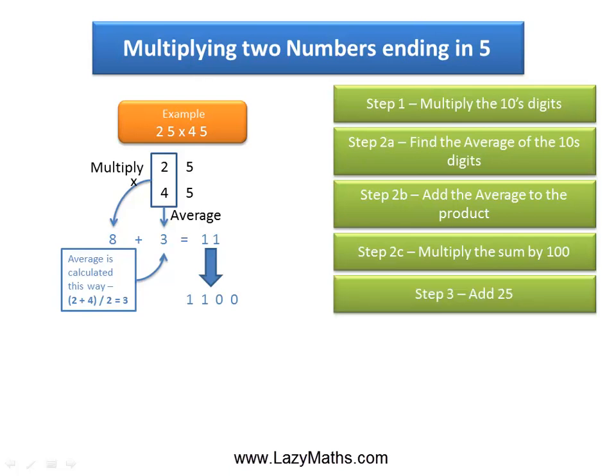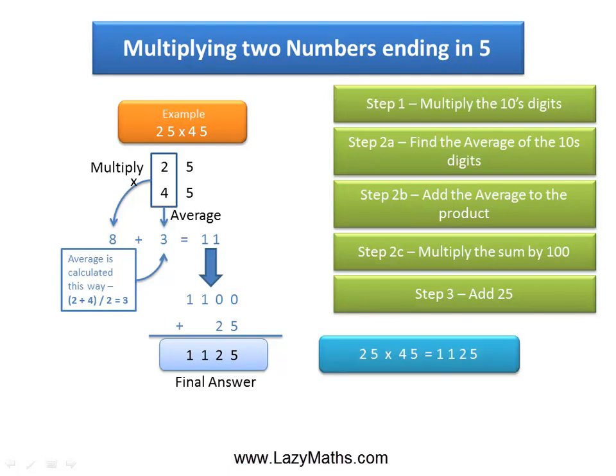As a last step, we simply add 25 to 1100 and we get 1125 as our final answer. So 25 times 45 equals 1125.